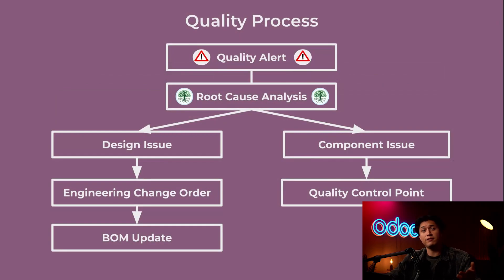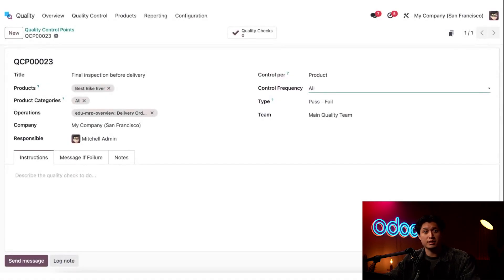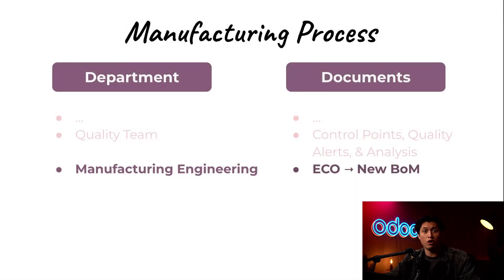The quality team runs a root cause analysis. If the fix is procedural, they can simply add a new quality control point at reception, picking, or even pre-ship. A Quality Control Point, or QCP, is a predefined check or inspection that is automatically triggered at a specific stage in your workflow. For example, we can add a QCP to inspect the product before we pack the order to be shipped.